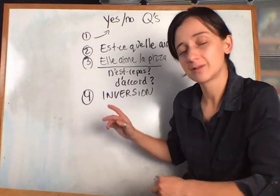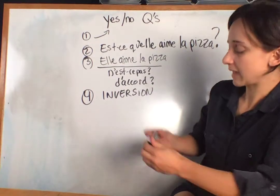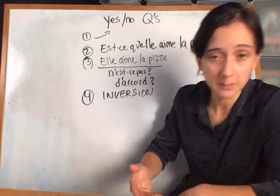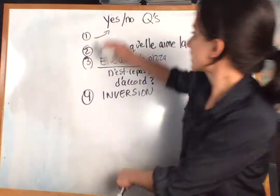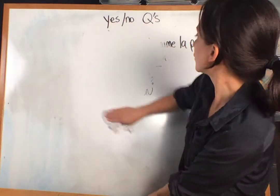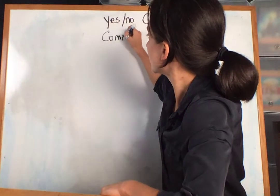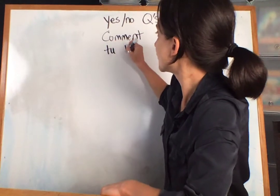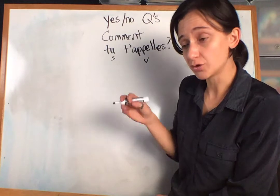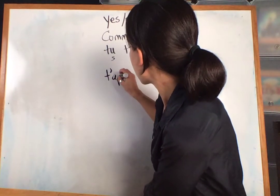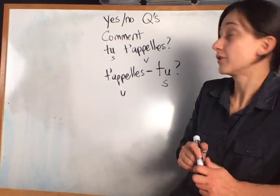The last method is the trickiest, but not too bad — it's inversion, which means we flip the subject and the verb. Normally we have subject then verb, just like in English. We've already seen this with 'Comment tu t'appelles?' — 'tu' is the subject, 'appelles' is the verb. But we can flip it and do an inversion: 'Comment t'appelles-tu?' We put a dash between them. Now we have the verb followed by the subject.